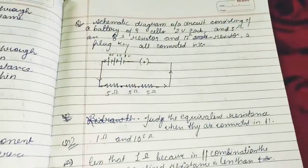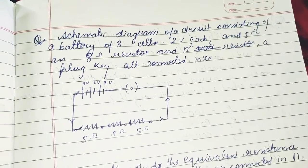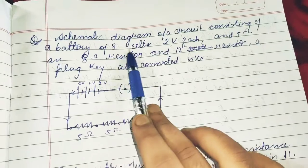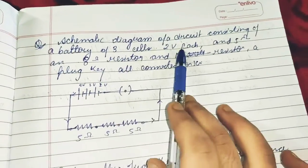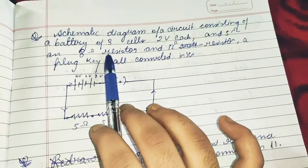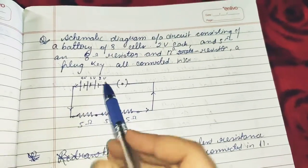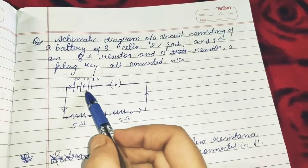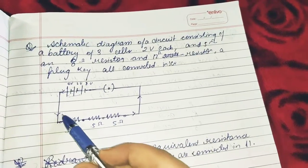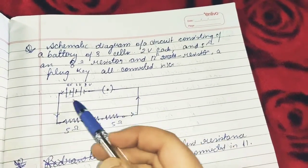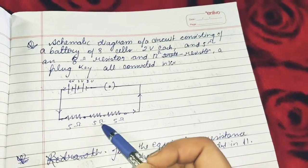Make a schematic diagram of a circuit consisting of a battery of three cells, two volts each, and five ohm, eight ohm, and twelve ohm resistors. Battery is a combination of cells. This is the schematic diagram — this is the battery, two volts, this is a plug key, this shows the current flow direction with an arrow, and these are the three resistors: five, eight, and twelve ohm, connected in series.